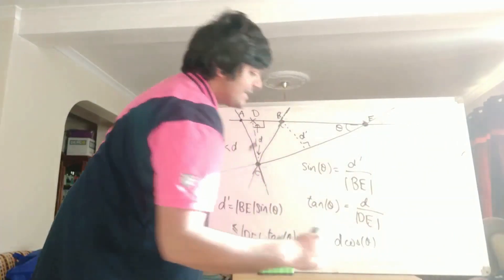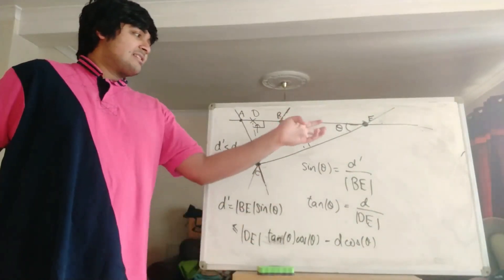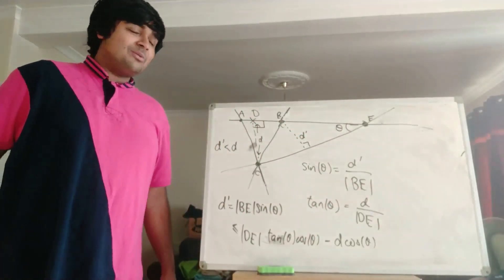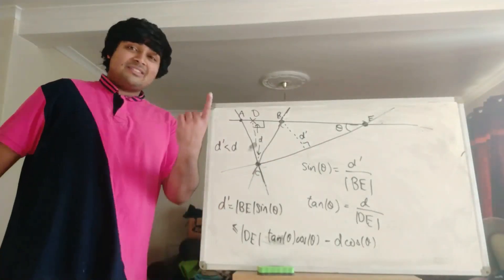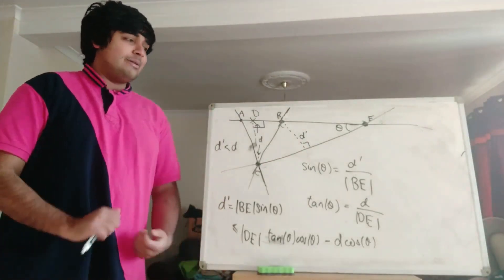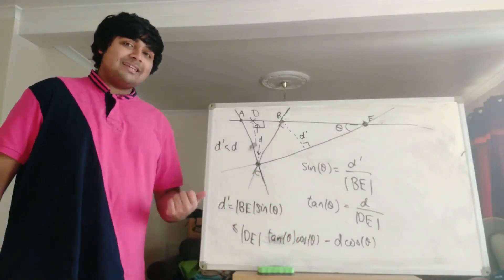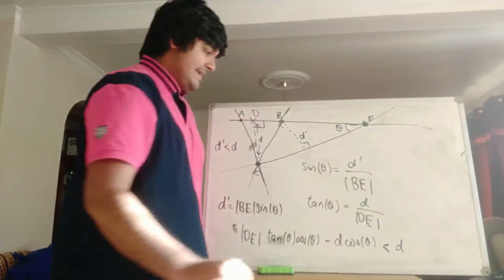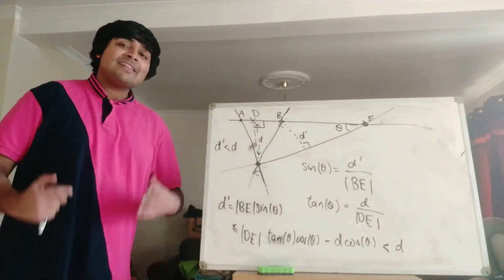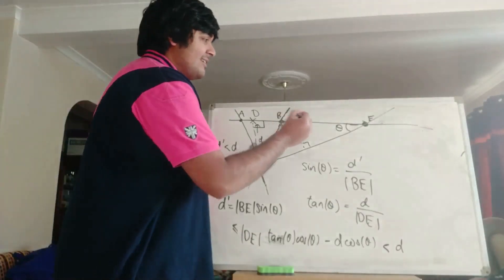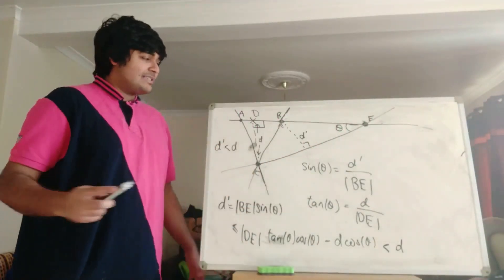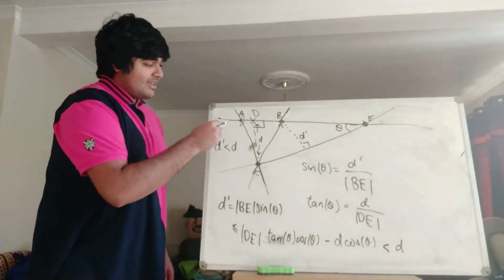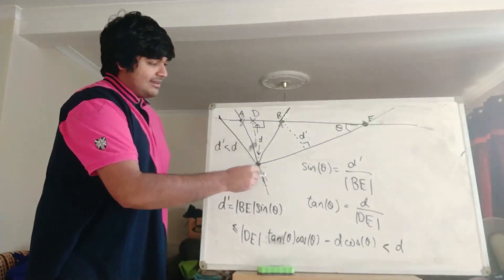So D prime is less than or equal to DE times tan theta times cosine theta. But DE times tan theta is just little d. So this equals d times cosine theta. Now theta is not going to be zero — by taking E further and further out, theta gets really really small but it's still positive, so cosine theta is never exactly one; it's a little bit less than one. Therefore D prime is strictly less than d, and we arrive at a contradiction. So E can't exist on this interval, and again by symmetry it can't exist on the interval to the left of A.